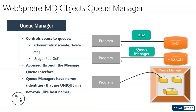The advantage of using MQ in between is that if your application does a direct insertion into the database and the database is down, your application services will stop working. But with MQ in between, if the database is down, the messages just sit on the queue. As soon as the database comes back up, the MQ listener starts and picks the messages from the queue.